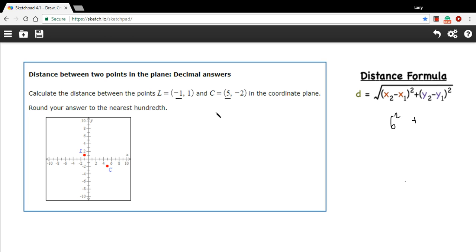And then the difference between the y-coordinates, 1 and negative 2. Negative 2 minus 1 is negative 3 squared.